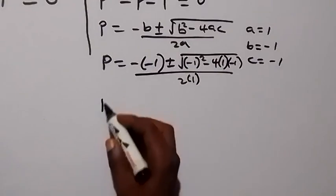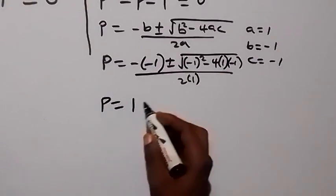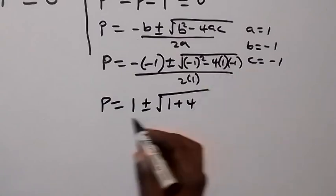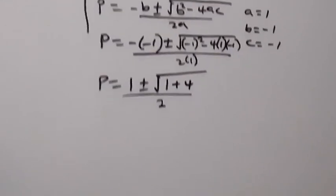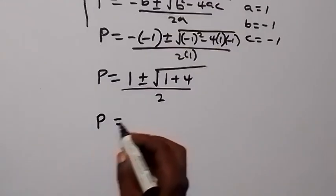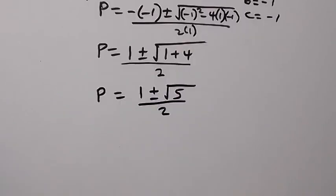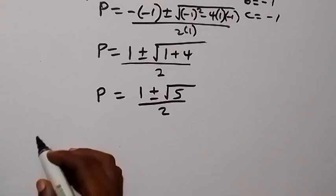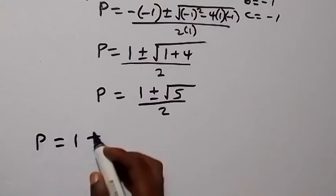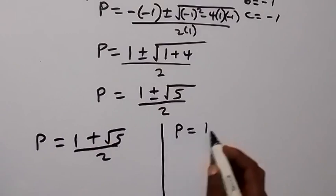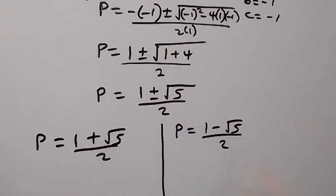So here we have p equals 1 plus or minus square root of 1 plus 4, over 2, which gives us p equals 1 plus or minus root 5 over 2. So we have two values of p: p equals 1 plus root 5 over 2, and p equals 1 minus root 5 over 2.